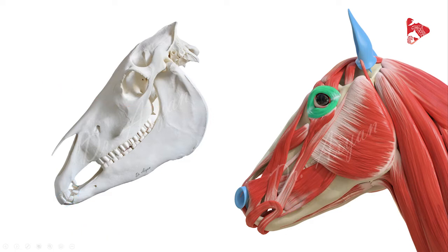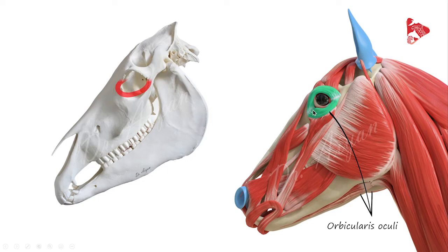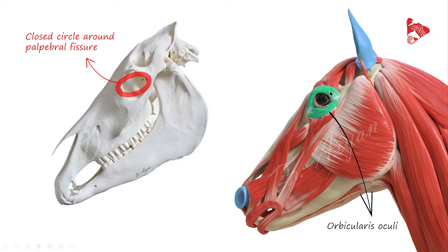Now let's move to the muscles that act on the eyelids and the nose. We'll start with this circular muscle called the orbicularis oculi, or the orbicular muscle of the eye. This muscle surrounds the palpebral fissure in a closed circle, and contraction of this muscle will close the palpebral fissure — the eye opening.